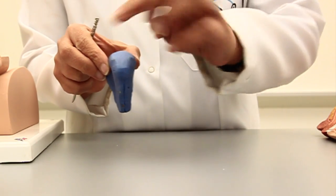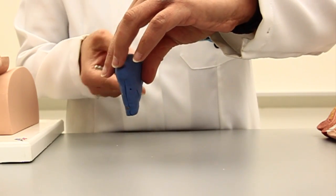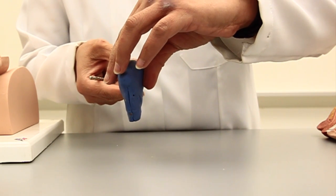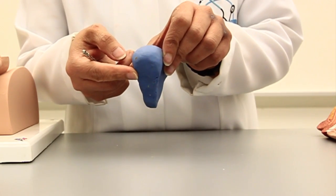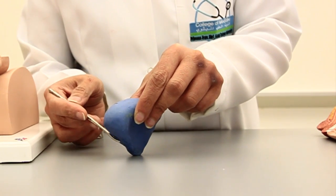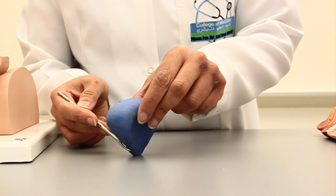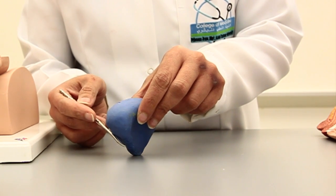So we are done with the three surfaces. Now I will be flipping the model. The posterior aspect will be under your view. This is also known as the base of the bladder and posterior surface.